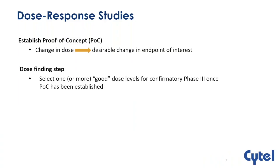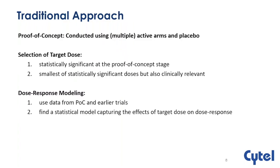This methodology is geared towards studies for determining proof of concept as well as a dose-finding signal. In the proof of concept, we want to see how a change in dose level leads to a desirable change in the endpoint of interest, while the dose-finding step is where we select one or more appropriate dose levels to pass into a confirmatory Phase 3 study, once we have established the proof of concept. MCP-MOD is a methodology that tries to combine these two stages.